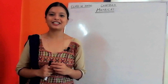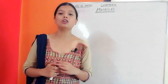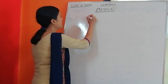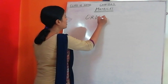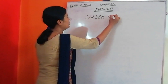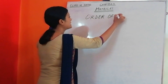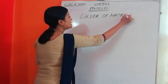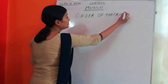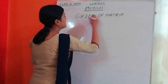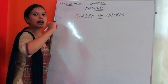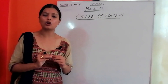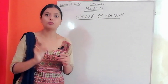Let's start. I will tell you what the order of the matrix is. I will show you how to arrange the matrix, how to represent the numbers, and I will arrange the row and column. I will give you an example.